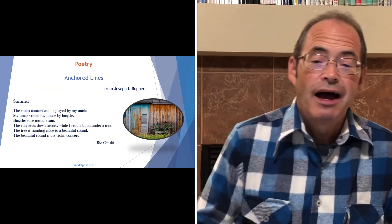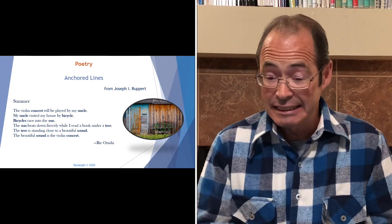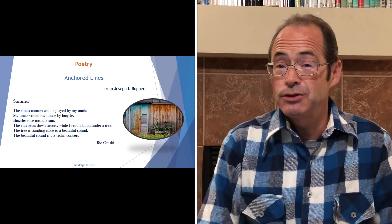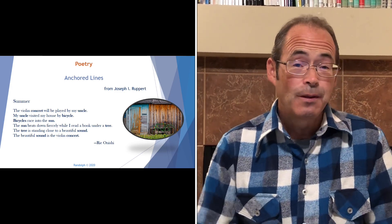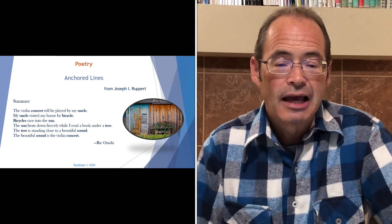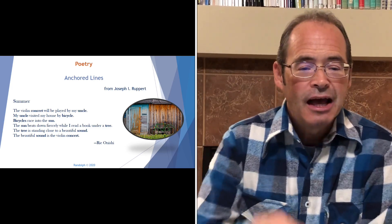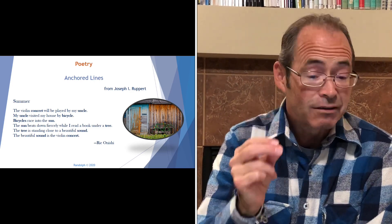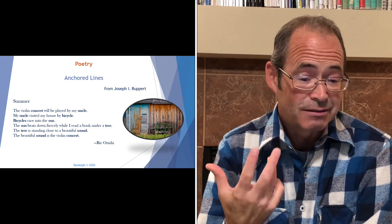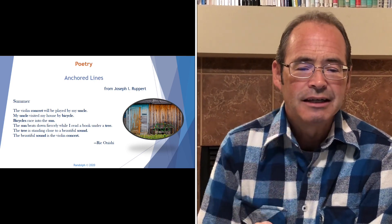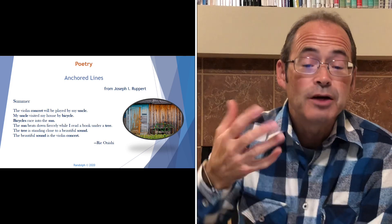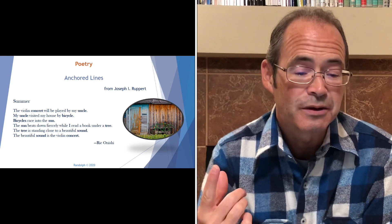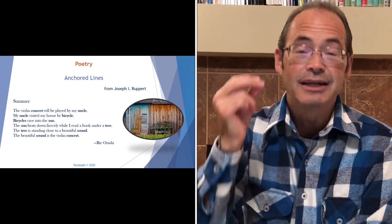Activity number two: this is a poetry activity called Anchored Lines. It comes from my friend and colleague Joseph Rupert. Let me read you a student sample before we get into the procedure. It's called 'Summer' by Rie Onishi: The violin concert will be played by my uncle. / My uncle visited my house by bicycle. / Bicycles race into the sun. / The sun beats down fiercely while I read a book under a tree. / The tree is standing close to a beautiful sound. / The beautiful sound is a violin concert.